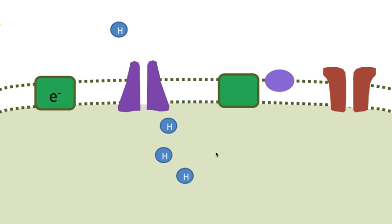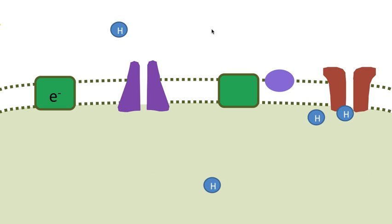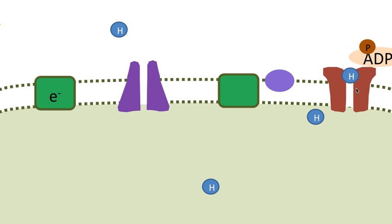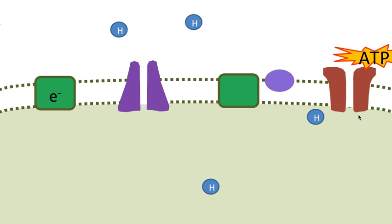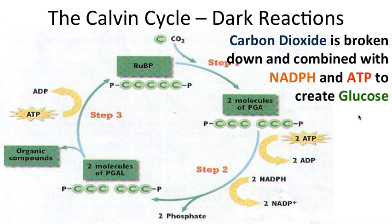When we have too many hydrogens in one area and not enough in another, they want to move with the gradient — high concentration to low. This is passive transport. We use that energy from the movement of hydrogen to take ADP and a free phosphate and combine them to make ATP, which is our second energy carrier that goes to the dark reaction.